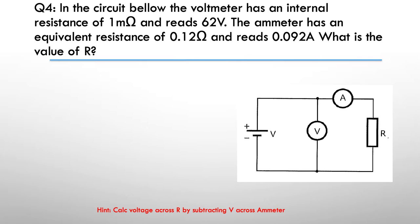Here's the hint: Calculate the voltage across R by subtracting the voltage across the ammeter. I simply worked out the voltage drop across the ammeter. We know that the ammeter is 0.092 amps through it, we know it has a resistance of 0.12 of an ohm, so I worked out that it had 11 millivolts dropped across the ammeter.